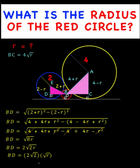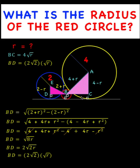We want this last form because it is easier to use in our next computation. Since there are right angles at D, B, and C, the points D, B, and C are collinear. So we can find the length of DC by adding BC plus BD. That gives us the expression where we add the coefficients 4 plus 2 times the square root of 2, and copy the common literal coefficient, the square root of R.